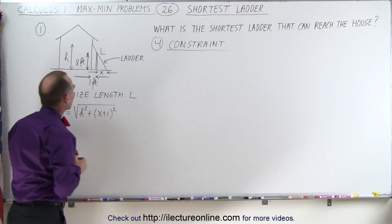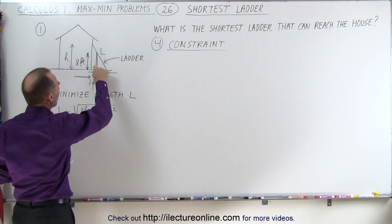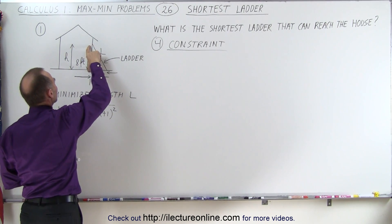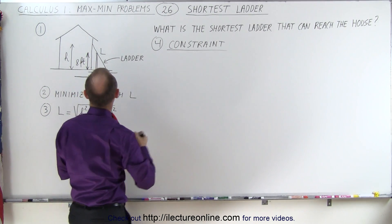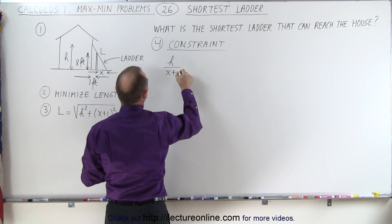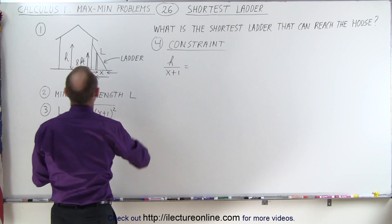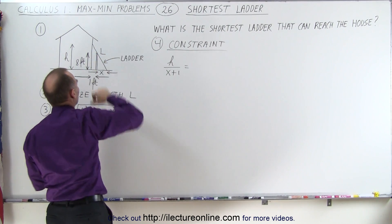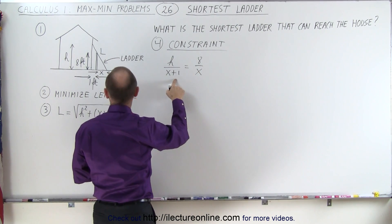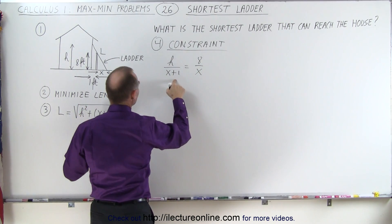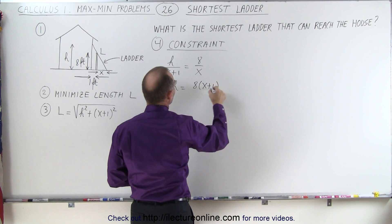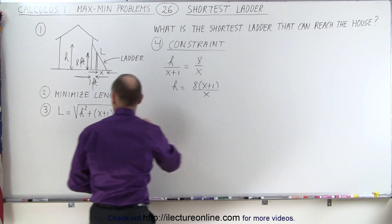We have two similar triangles — the small triangle and the big triangle. We can say that the height of the big triangle to the width of the big triangle, which is h divided by (x + 1), should be proportional to the ratio of the height of the wall to this distance, which is 8 over x. So h is equal to 8 times (x + 1) divided by x, and that can go right into our equation.